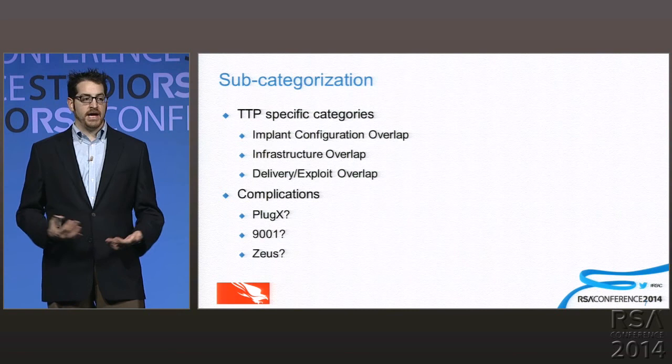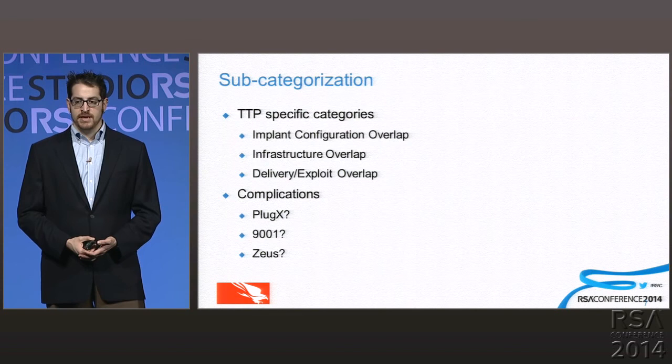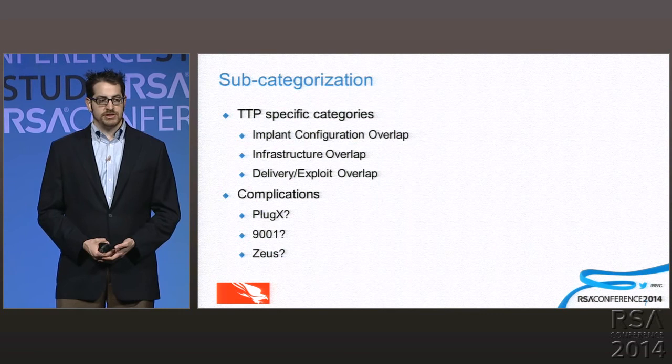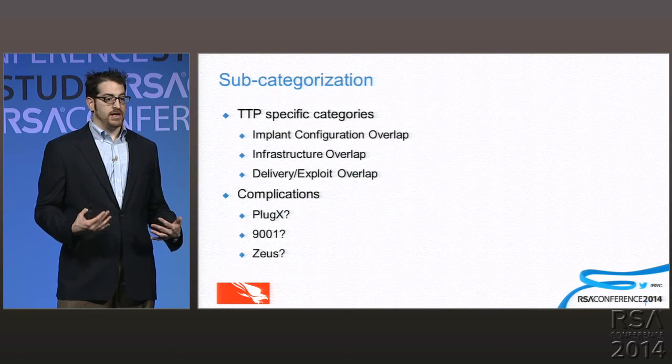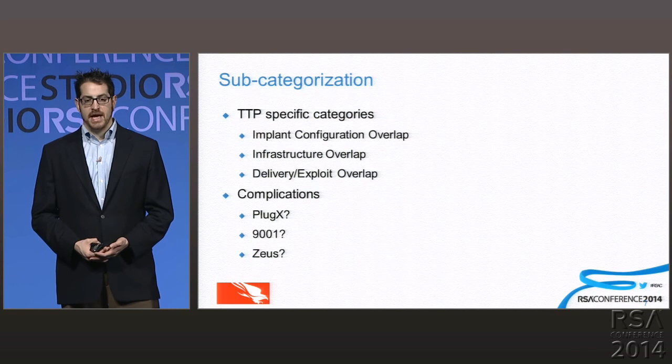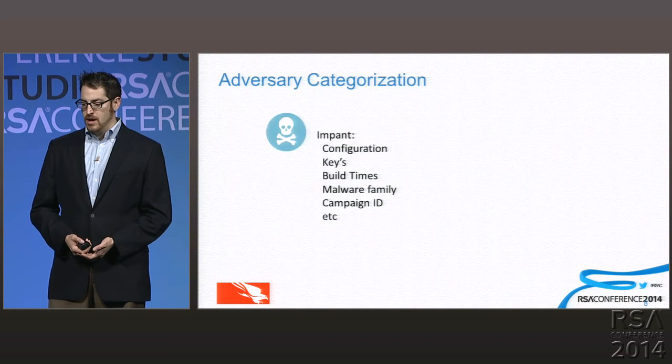There are some complications here. PlugX, if you're familiar with it, is a well-known implant that tends to have a focus around China. Initially many people thought it was one adversary group because it was a unique implant. What we found is that it actually moved across several different groups, so what the community attributed to one threat actor was actually tied to numerous different actors. You have to be very careful when relying on some of these indicators as a measure of attribution.